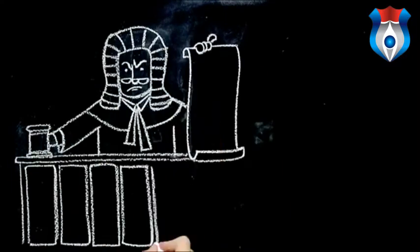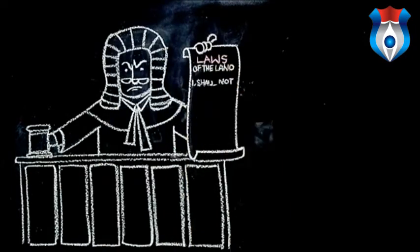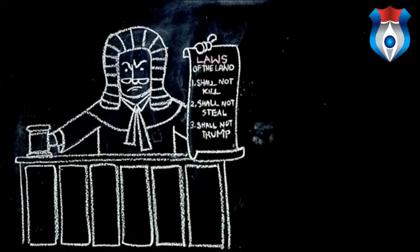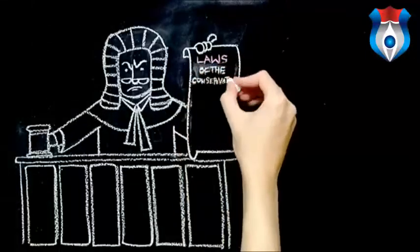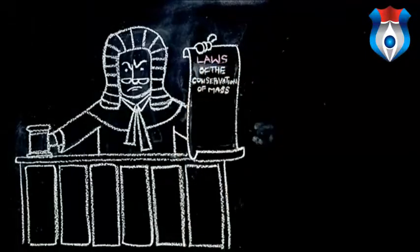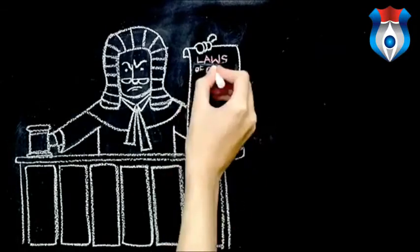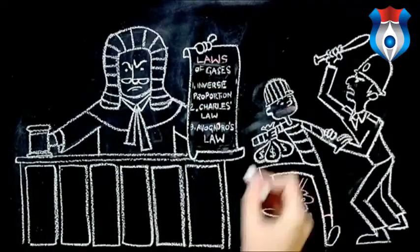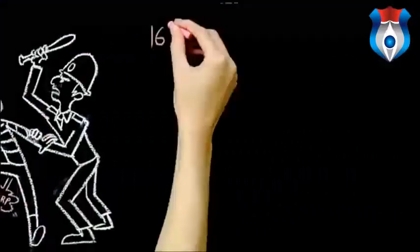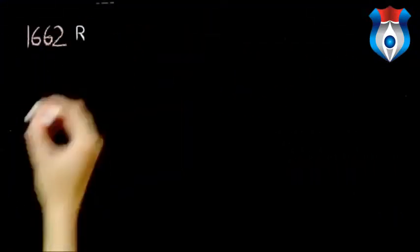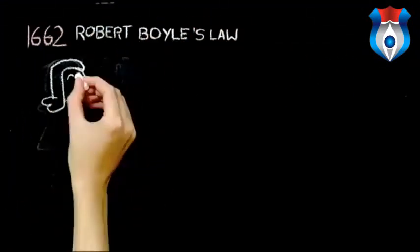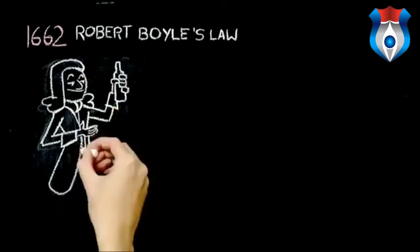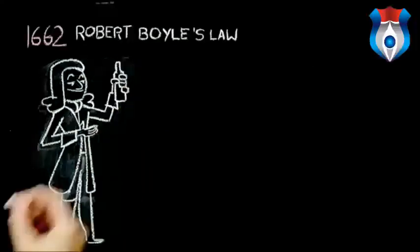In society, we have to follow laws that maintain order. Did you know all chemical matter follows certain laws as well? We can describe those laws by looking at relationships. Some easy laws to begin with are the ones that govern the gases. Back in 1662, Robert Boyle realized that gases had an interesting response when he put them into containers and changed their volume.